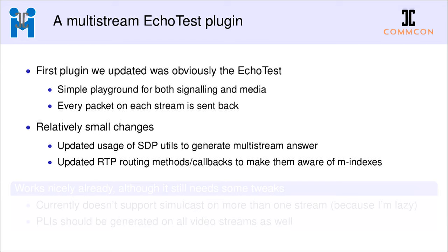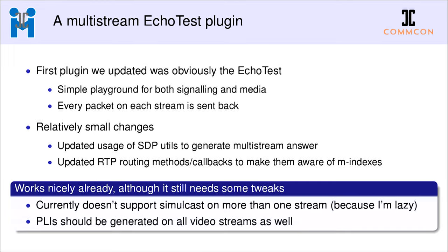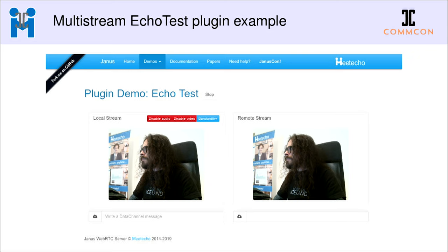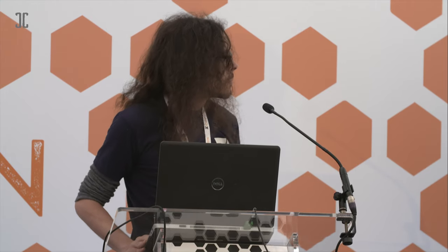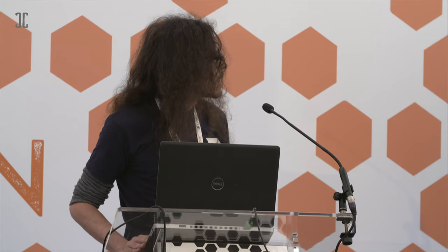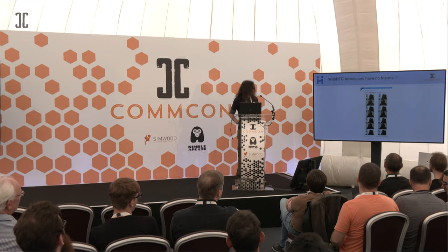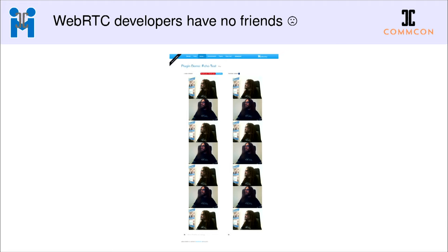It already works nicely — I'm a bit lazy so I didn't update all functionality like simulcast on more than one stream, but as a proof of concept it does the job. In the current echo test, I added another video stream in parallel — that became a new M-line in the SDP, Janus created a new medium instance, the plugin was aware of it. I kept adding more streams, and on a single peer connection I was able to get much more than that single video stream I had before. WebRTC developers have no friends — they always talk to themselves!